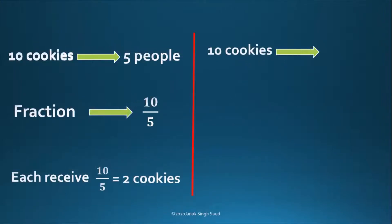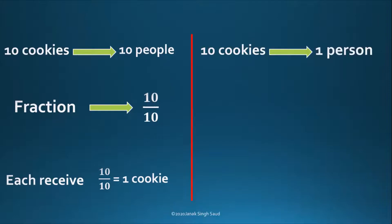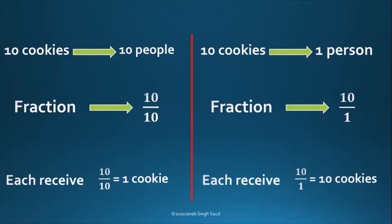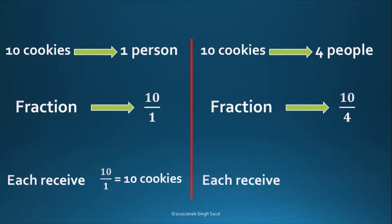Similarly, if there are 10 cookies and 10 people at the table, each will receive 1 cookie. If there are 10 cookies and only one person at the table, that person will receive 10 cookies. And if 10 cookies are distributed equally among 4 people, it is 10 by 4, meaning each will receive 2.5 cookies. This introduces the idea of fractions and division.